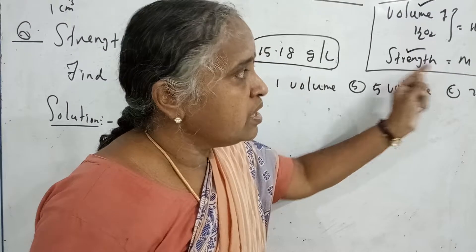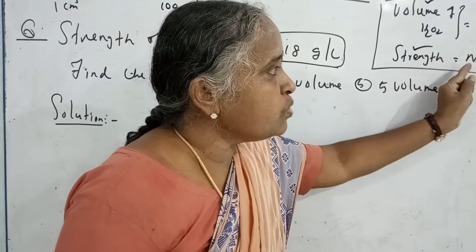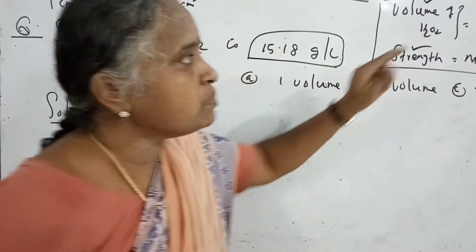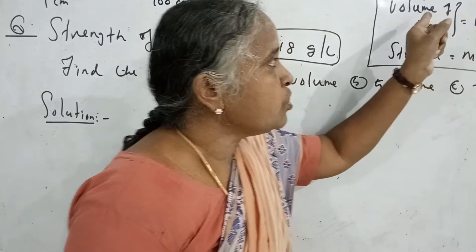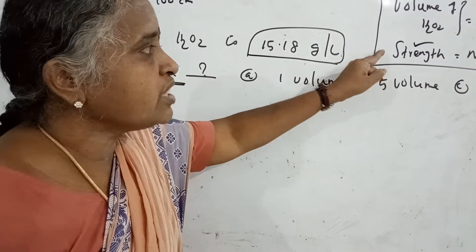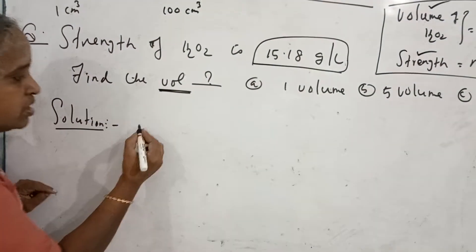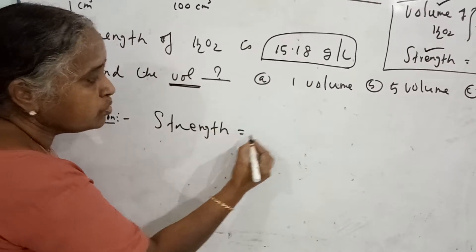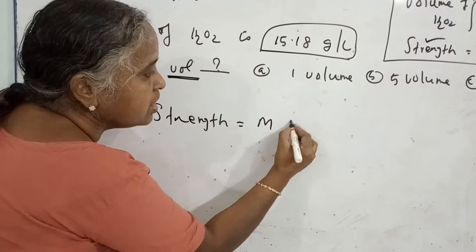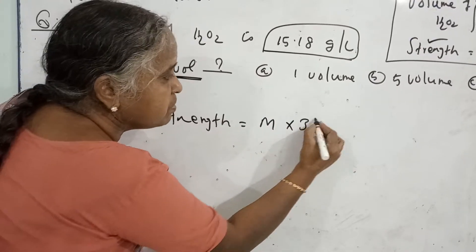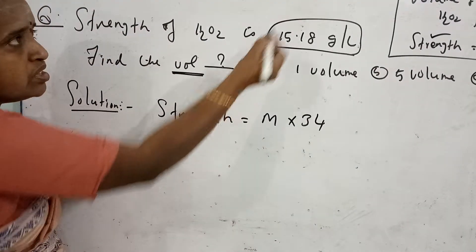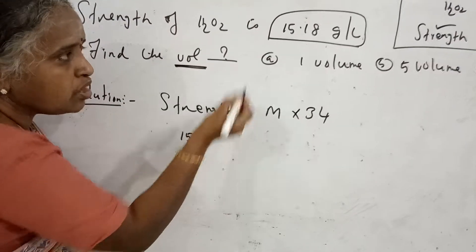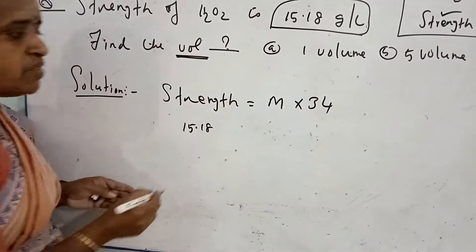Strength is given. So, from the strength formula, you can find out the molarity. Then apply the molarity in the volume equation, and you can find out the volume. Now let us go to the first stage. Whenever you are doing, apply the values in the formula.